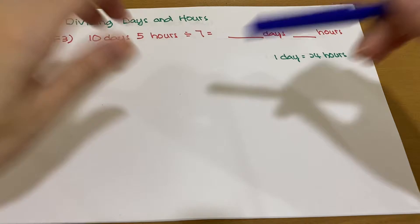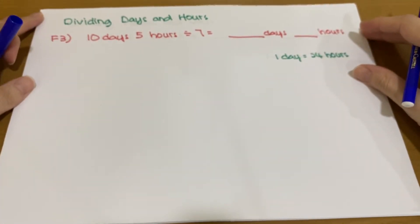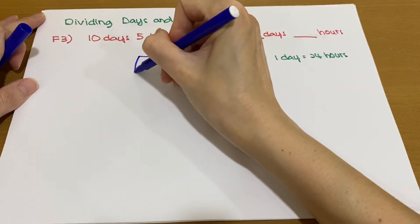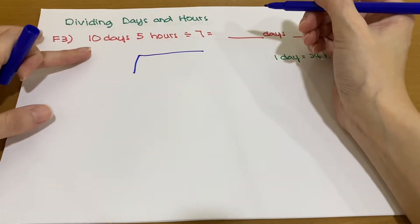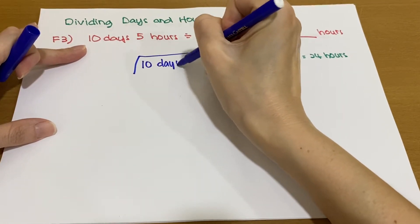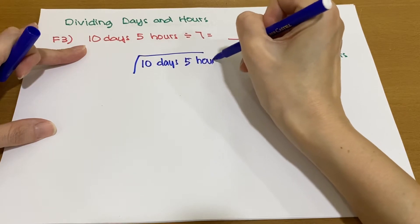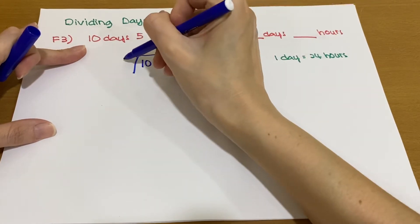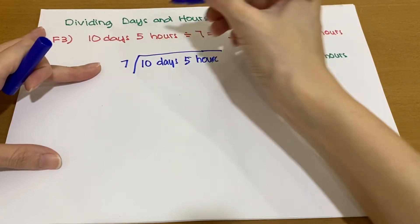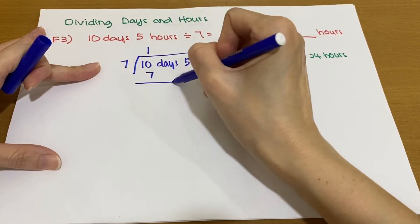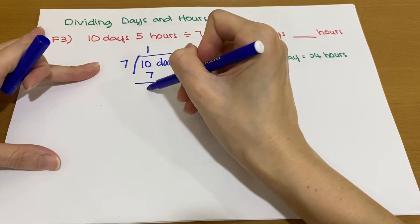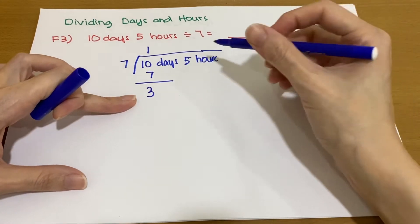We do the division using the long division method. We arrange the time, putting 10 days 5 hours inside and 7 outside. We divide with the days first: 1 × 7 = 7, so 10 minus 7 gives us a balance of 3. These 3 days we need to convert to hours.